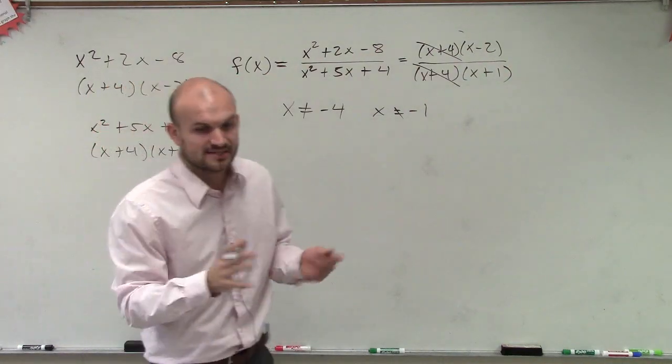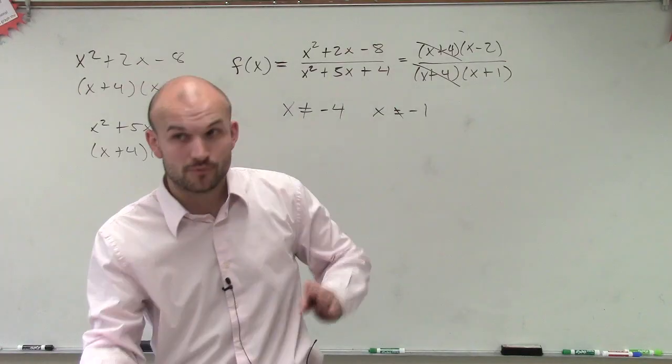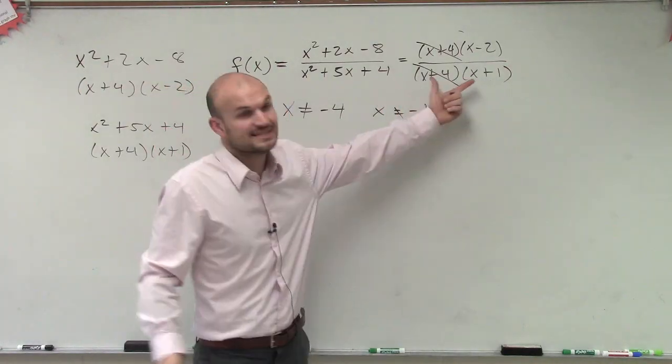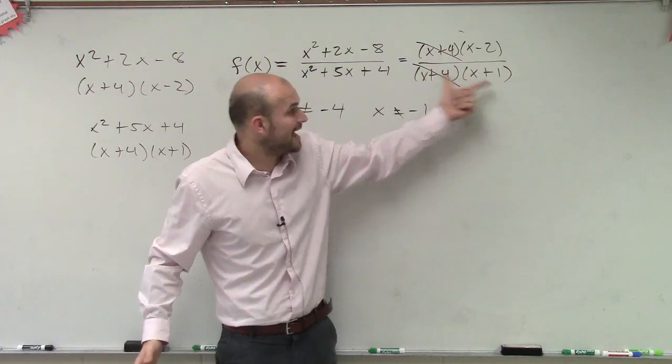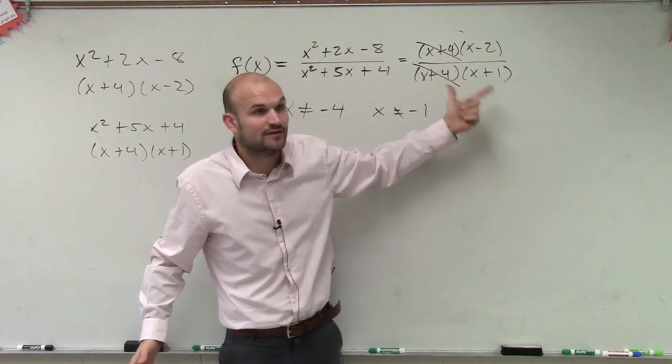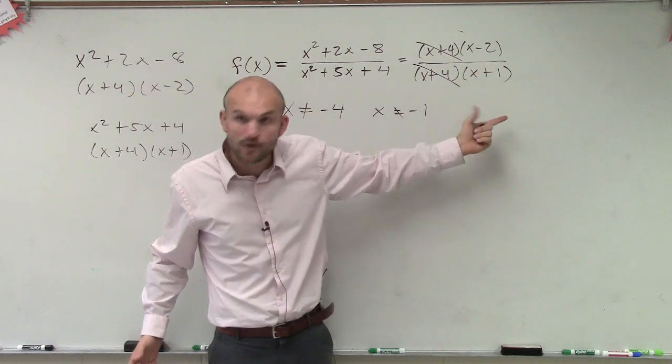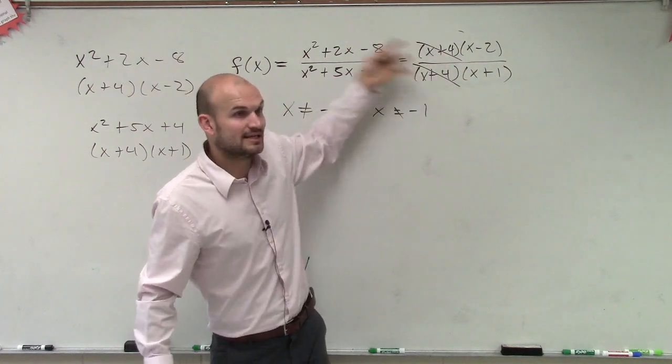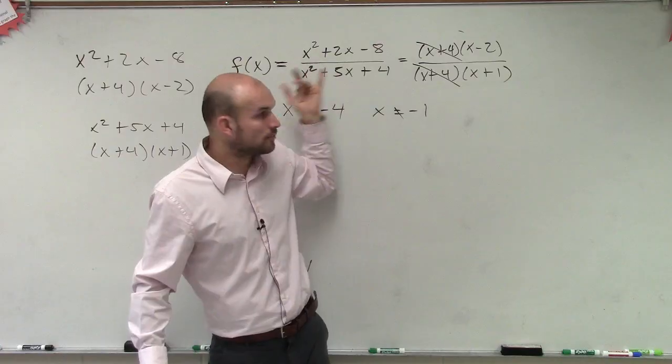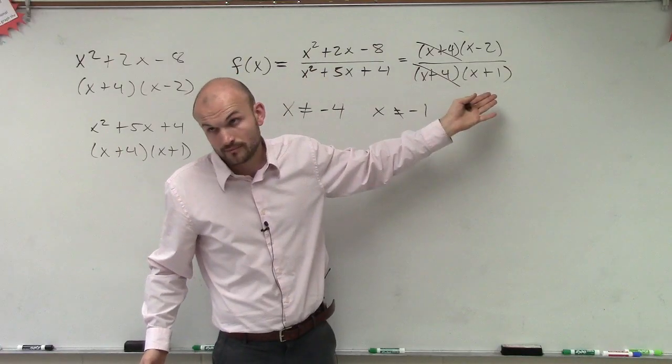So there's a couple things I just want to go over. So that's removable and non-removable. Does that make sense? They're both discontinuities. You both cannot have x equals negative 4 and x equals negative 1 in your denominator. Does that make sense? Because then it makes your denominator equal to 0. However, this one we can eliminate by factoring. So it's removable. This one is non-removable, all right?